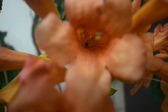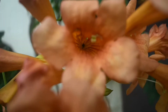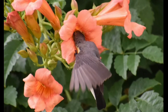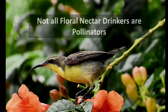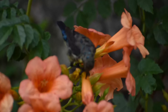Diluted nectar is present in abundant quantity at the base of the flower. To reach this reward, the bird goes inside and so pollinates the flower. Birds are floral nectar drinkers, but not all floral nectar drinkers are pollinators — a few are nectar robbers.